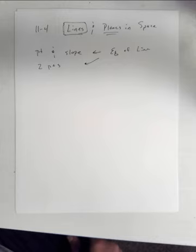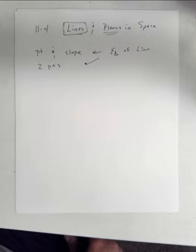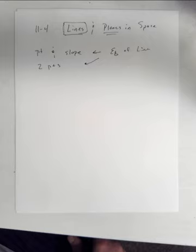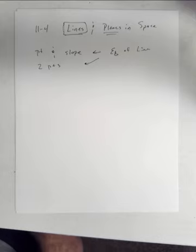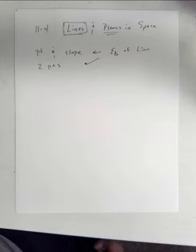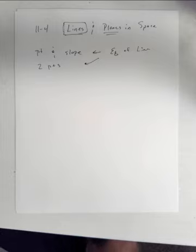So if we're going to find the equation of a line in space, the only way we can do it is through parametric form. Remember what parametric meant — we had a third variable as a parameter. We could eliminate parameters or create them so we had X, Y, and now also Z in terms of the parameter variable.